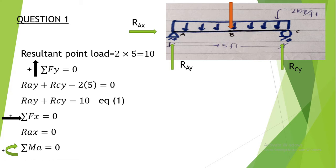We know how to determine end reactions for a beam subject to a point load — we apply conditions of equilibrium. Applying ΣFy = 0 with upward forces as positive: there are three vertical forces — RAY, the resultant point load (10 kips), and RCY. RAY and RCY are positive; the resultant load (2×5) is negative as it acts downward. Solving gives Equation 1.